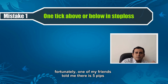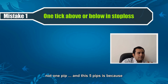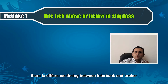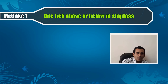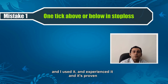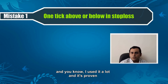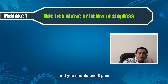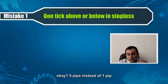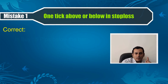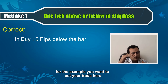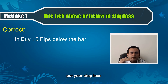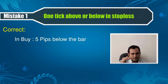Fortunately, one of my friends told me to use five pips, not one pip. These five pips account for the difference in timing between interbank and brokers, so you should put five pips instead of one pip. I used it, experienced it, and it's proven — you should use five pips below the bar. In a buy, when you want to put your stop loss below the bar, put your stop loss five pips below the bar.